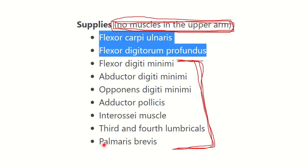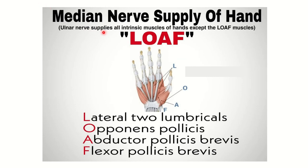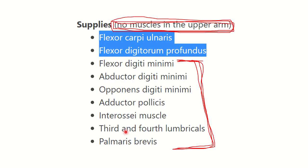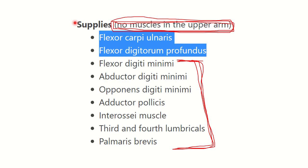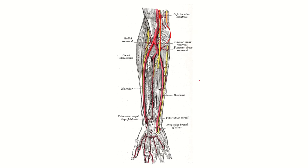We also need to consider the median nerve to help exclude options. The mnemonic is LOAF: L for lateral two lumbricals supplied by the median nerve — third and fourth lumbricals are supplied by the ulnar nerve. O for opponens pollicis — supplied by the median nerve. A for abductor pollicis brevis. F for flexor pollicis brevis. However, adductor pollicis is supplied by the ulnar nerve — this is a very important point.